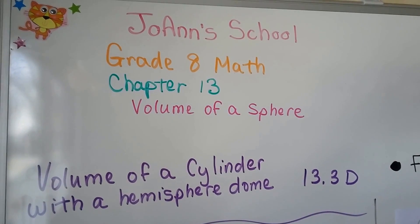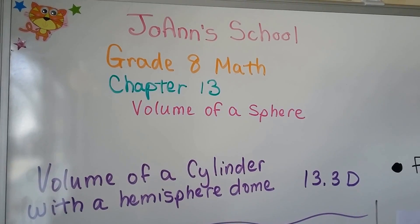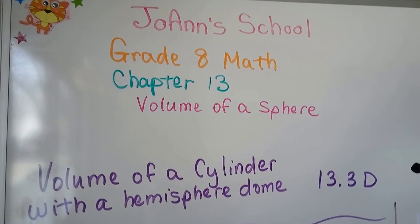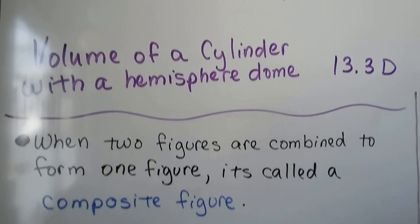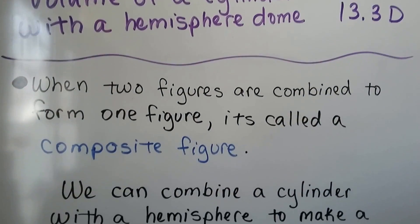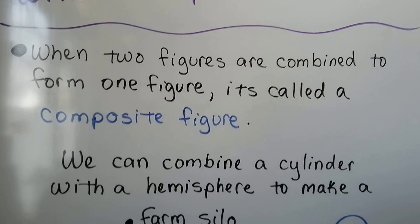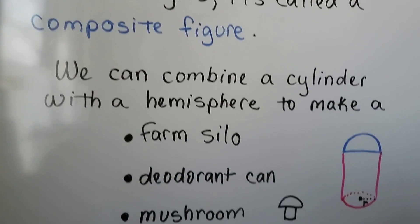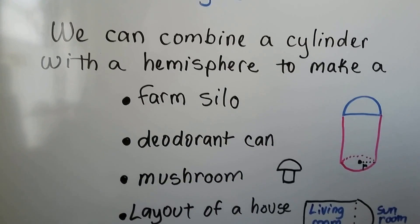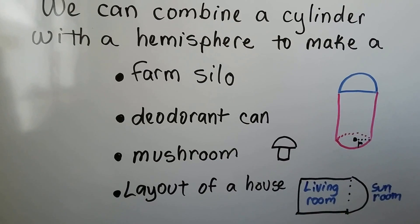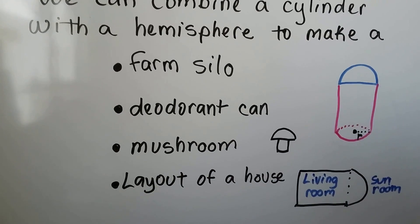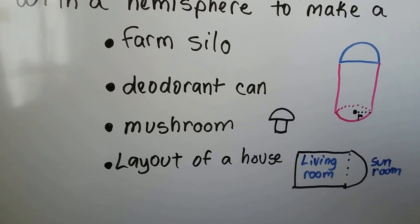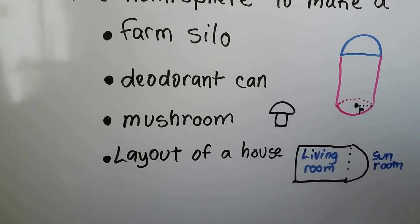Volume of a Cylinder with a Hemisphere Dome — Lesson 13.3D. When two figures are combined to form one figure, it's called a composite figure. We can combine a cylinder with a hemisphere to make a farm silo, a deodorant can, even a mushroom, or the layout of a house.